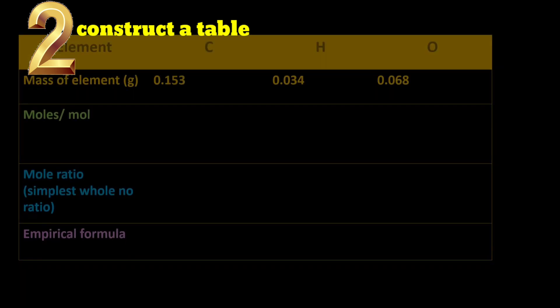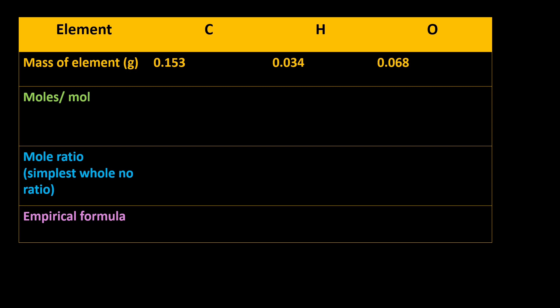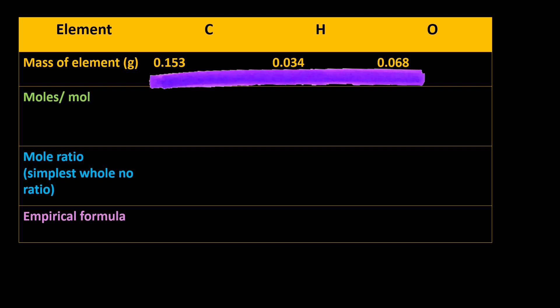Step 2 is to construct a table with rows to fill in elements, mass of elements, moles, mole ratio, and empirical formula. The elements for isopropyl alcohol are carbon, hydrogen, and oxygen. We can fill in the elements and, from Step 1, we already calculated the mass of each element, which we can also fill into the table.